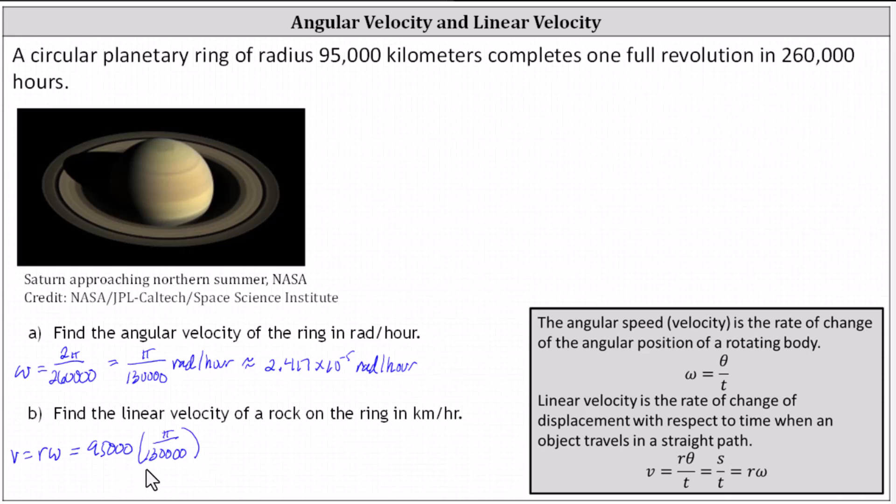And we know the angular velocity is pi divided by 130,000 radians per hour. 95,000 divided by 130,000 simplifies to 19 divided by 26, giving an exact linear velocity of 19 divided by 26 pi kilometers per hour. Or as a decimal approximation, 2.296 kilometers per hour.